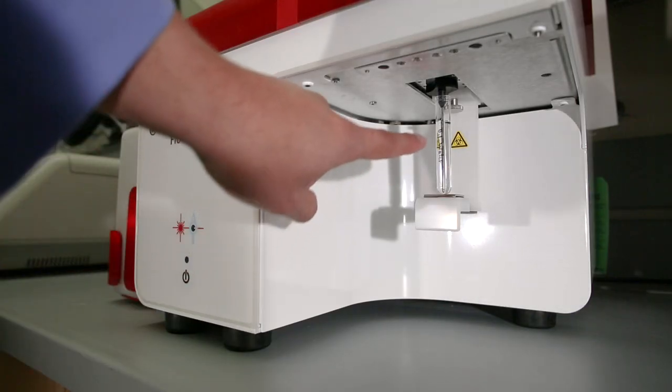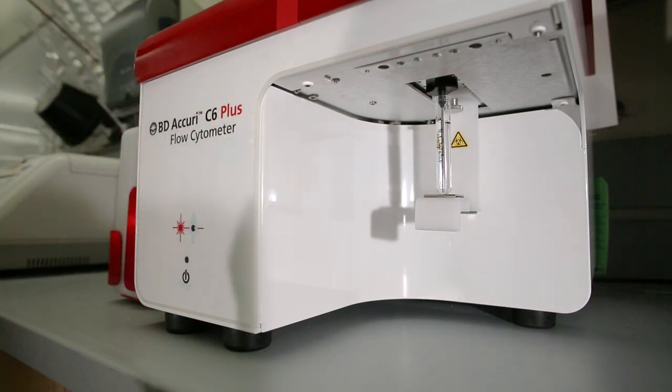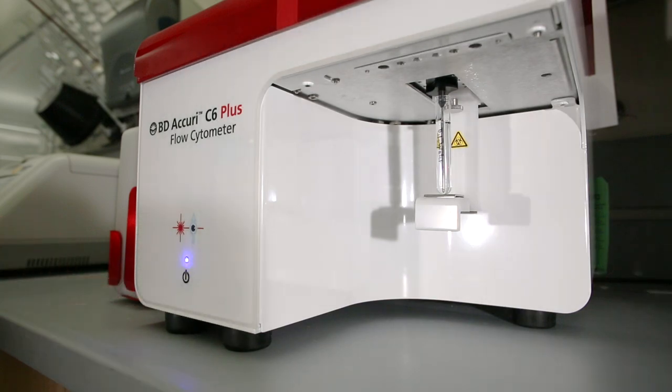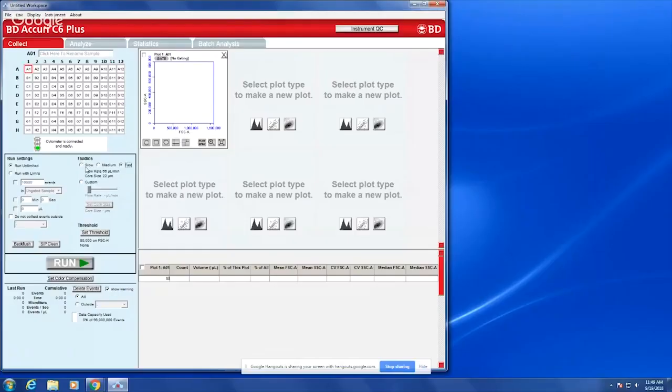To start up the cytometer, first check that there are at least two milliliters of water in the sip. Push the power button and wait. It will take the machine about 15 minutes to start up.